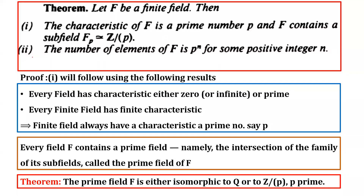Moving on to the second part: the number of elements of F is p raised to power n. When a field is finite, its number of elements must equal a single prime power. For example, if someone asks whether there is a field with 10 elements, the answer is no, because 10 cannot be written as the power of a single prime — writing 10 requires two primes, 2 and 5. So there is no finite field with 10 elements.